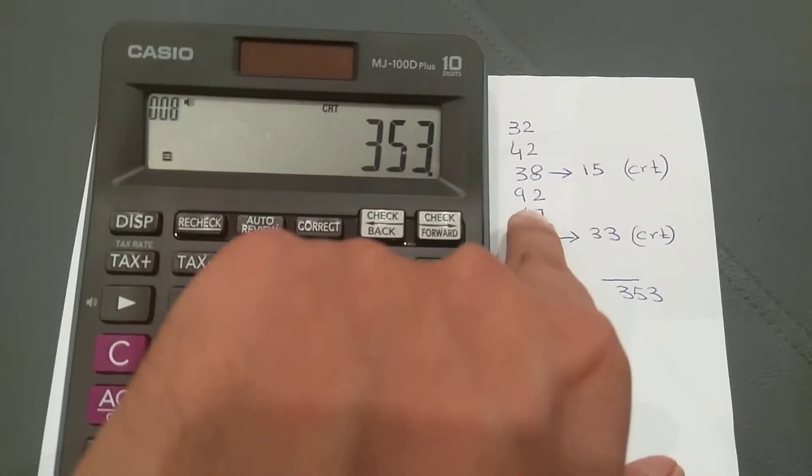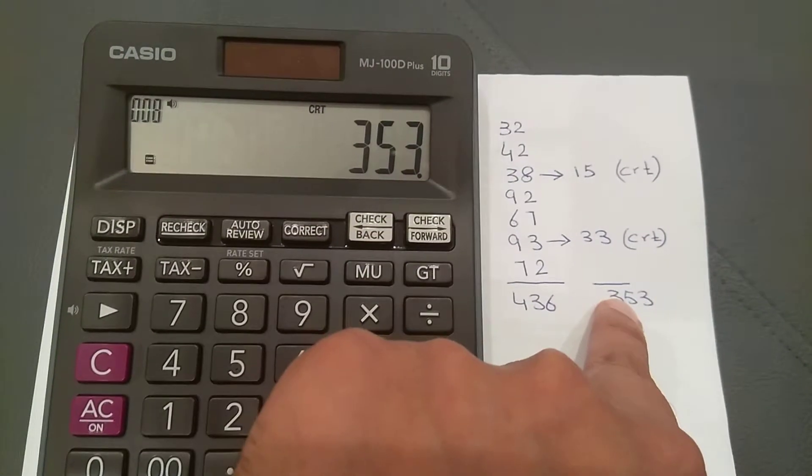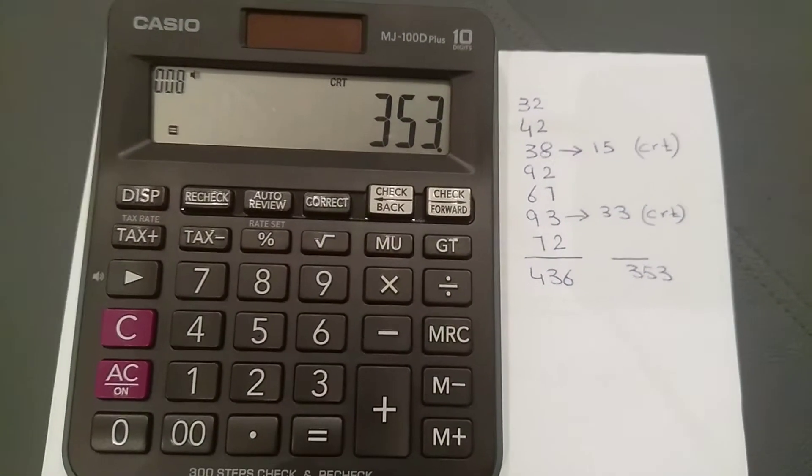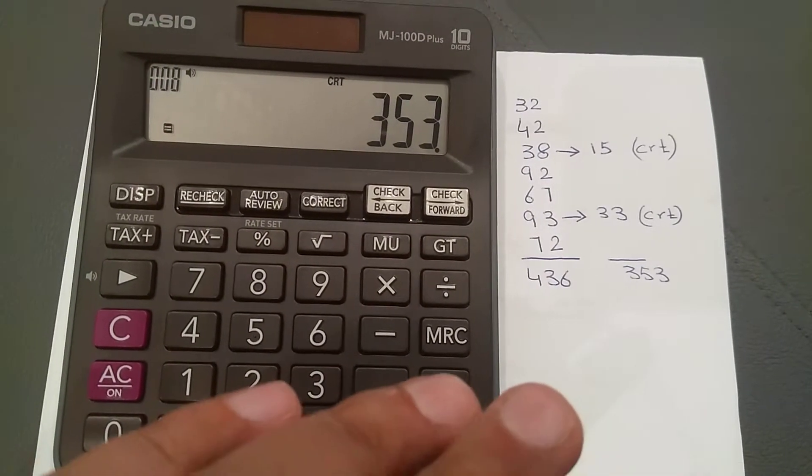So 353 is the total after correcting these numbers. Instead of 38 and 93, I put 15 and 33. I hope you understand this concept. It's very easy and you can repeat this video to understand better.